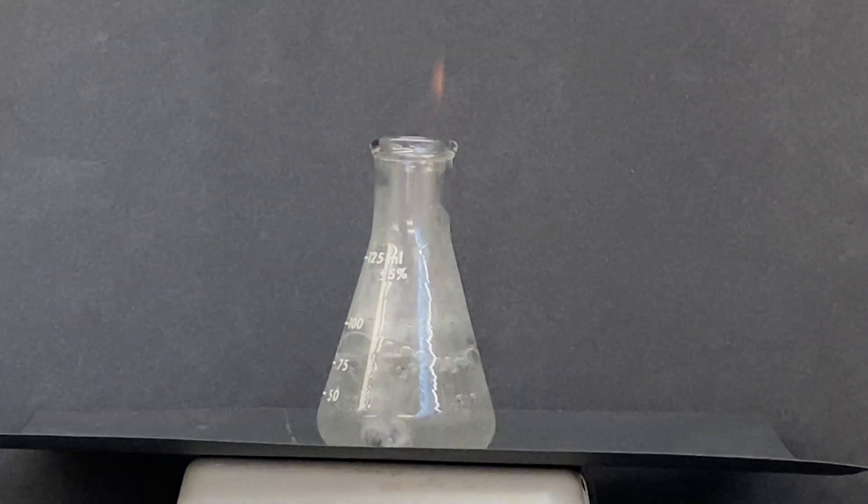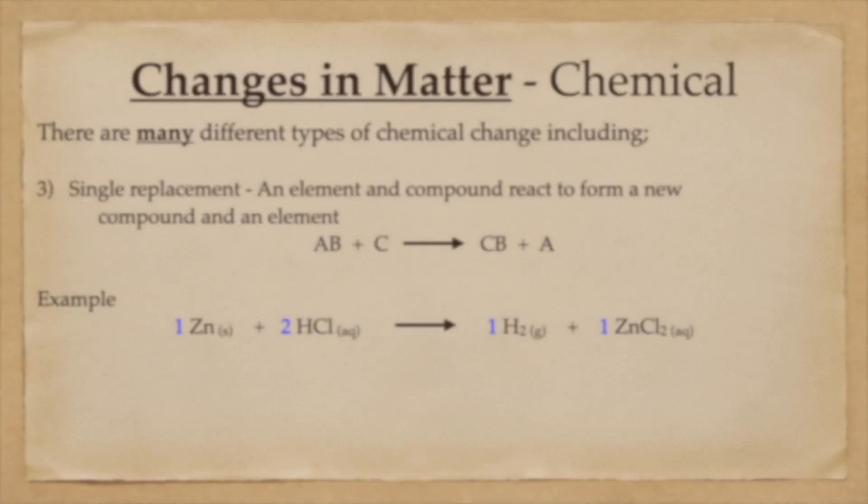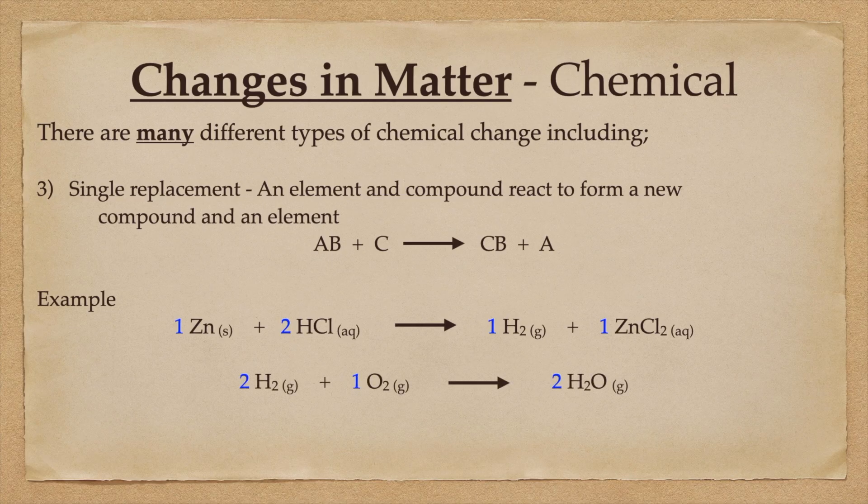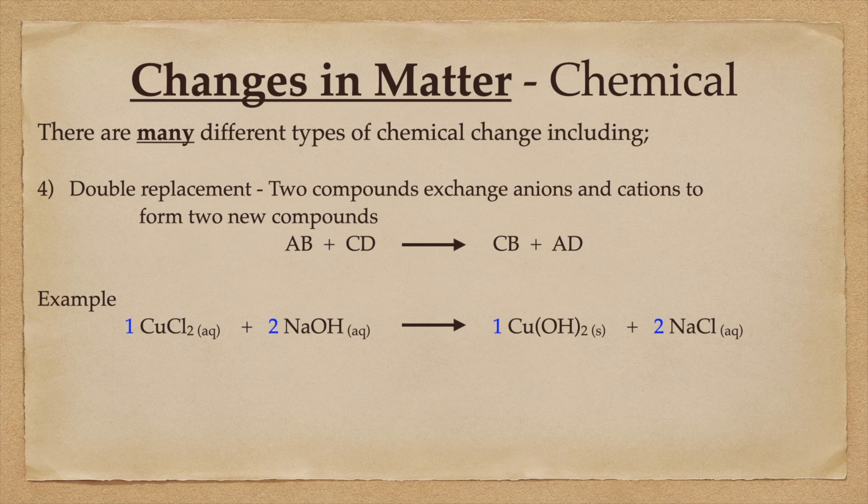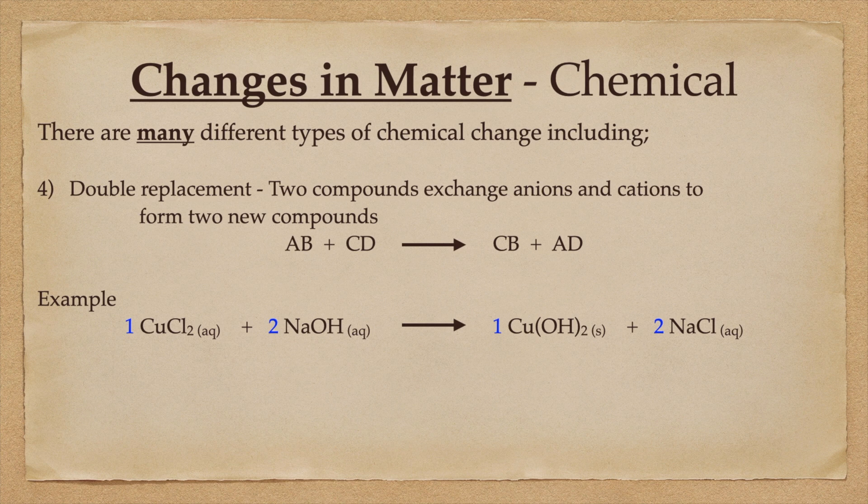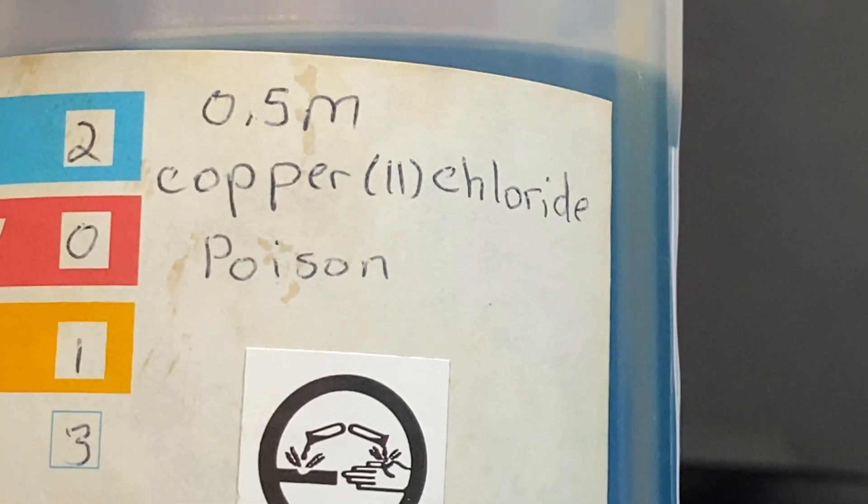The fourth kind of reaction is called double replacement. That is the reaction between two ionic compounds that exchange cations and anions to form two new ionic compounds, and it often takes place in the aqueous phase.